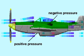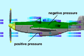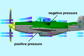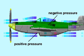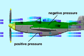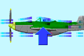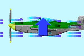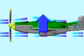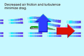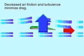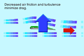The faster air moves, the lower its pressure. Airflow over a curved surface is faster than a flat one, so the reduced air pressure above the wing results in lift. By decreasing air friction and turbulence with smooth design, drag is minimized, making an aircraft more airworthy.